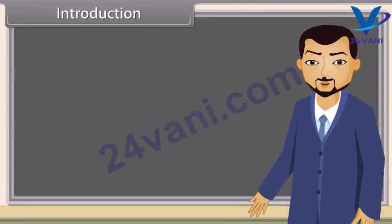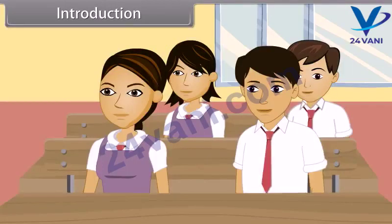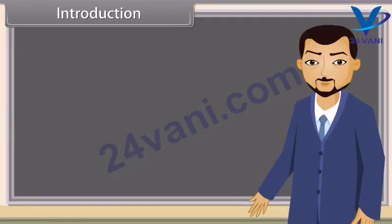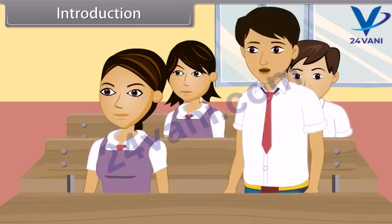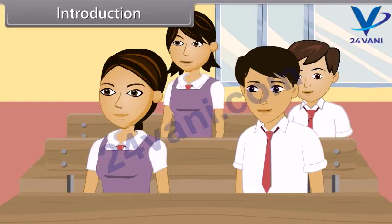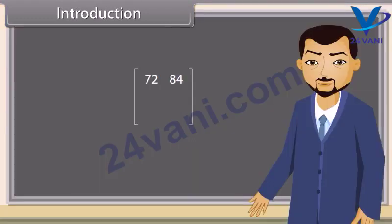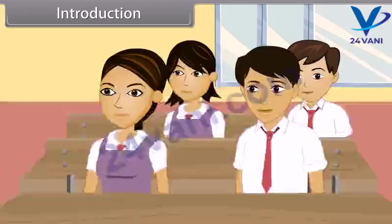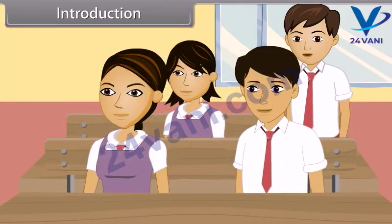Arun, how much you scored in science last year? Teacher, 72. And how much in maths? Teacher, 84. 72 in science and 84 in maths. Shraddha, now you tell me, how much did you score in science and maths? Teacher, I scored 86 in science and 85 in maths. 86 in science and 85 in maths. Prateek, you tell me now. Teacher, 67 in science and 72 in maths.